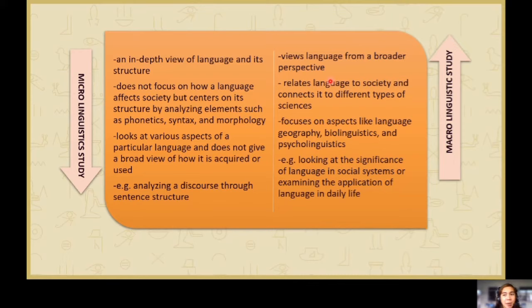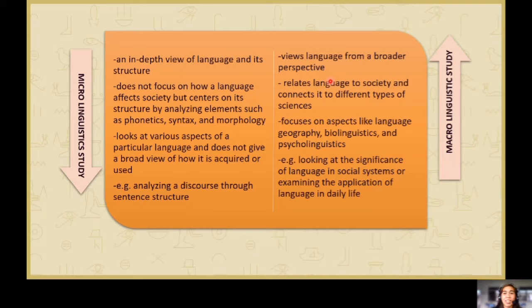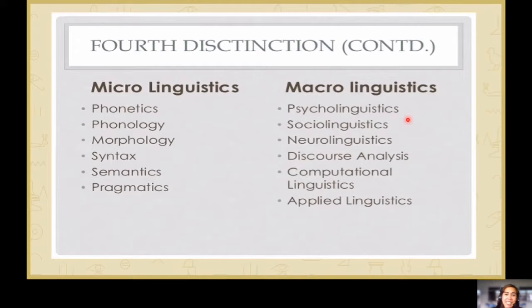Micro-linguistic study and macro-linguistic study are both studies about language itself. When we talk about micro, it is in-depth but very specific — like studying language in terms of pronunciation, sentence structure, and definition of language. For macro study, we study language but use other fields — like how language is used in society, its function in psychology, or the language of biologists. Macro is a bigger field, but micro is specific. Examples: micro includes phonetics and phonology; macro includes psycholinguistics and sociolinguistics.